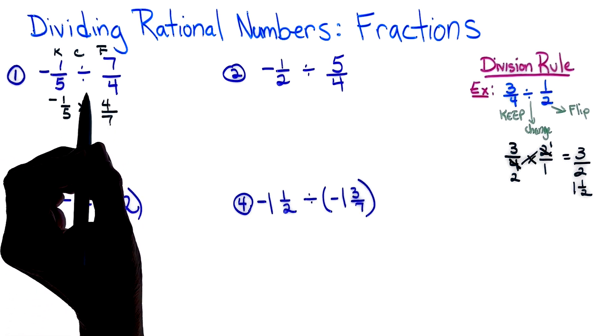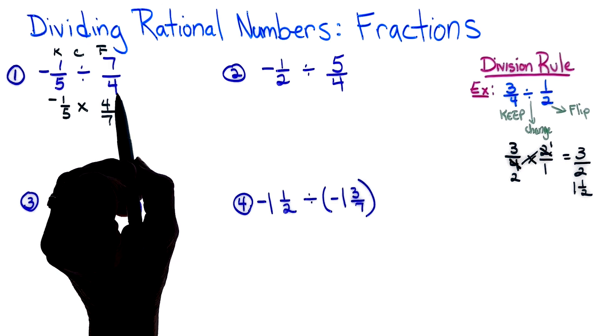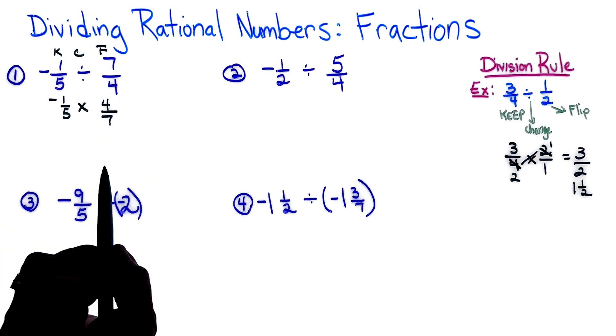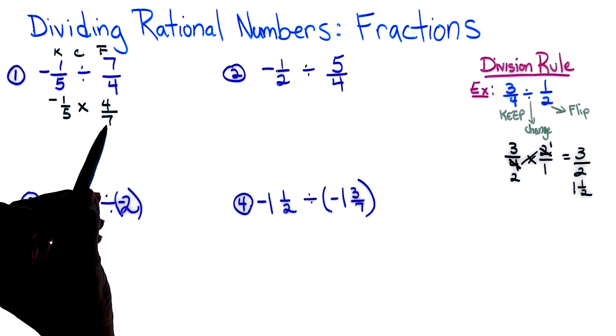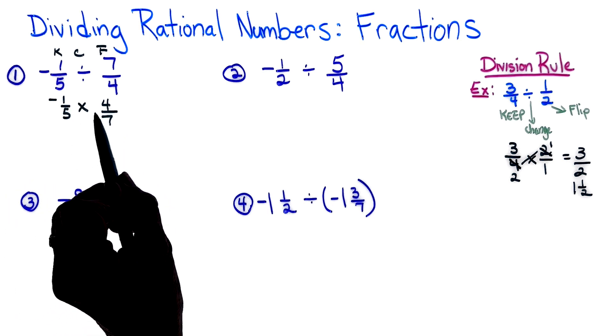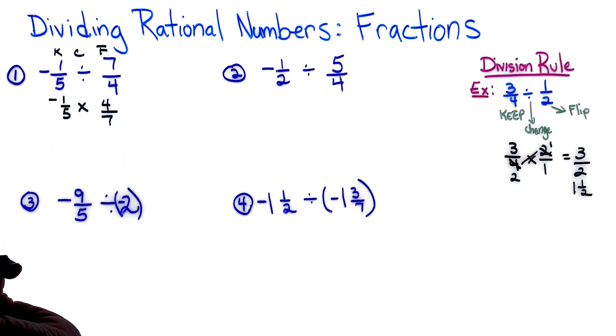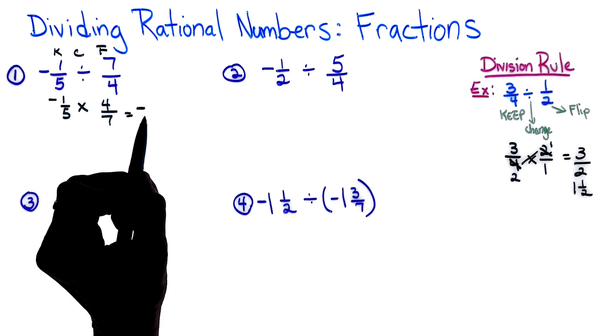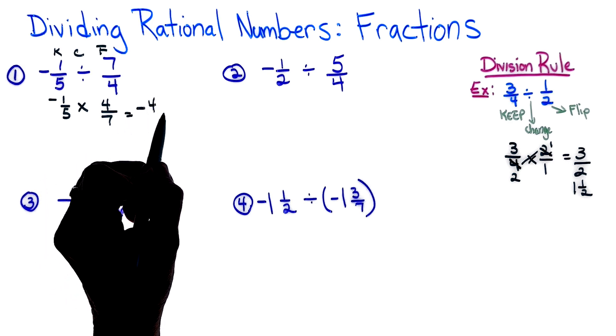So now I'm checking, can I simplify before I multiply? And the answer there is no. So I end up with a negative 4 over 35, 4/35ths, and I cannot simplify that, so that is my final answer.